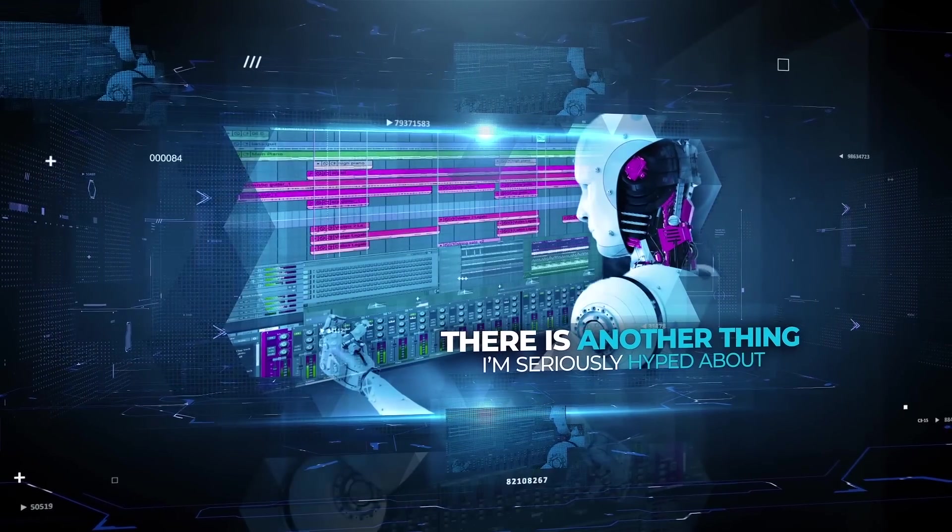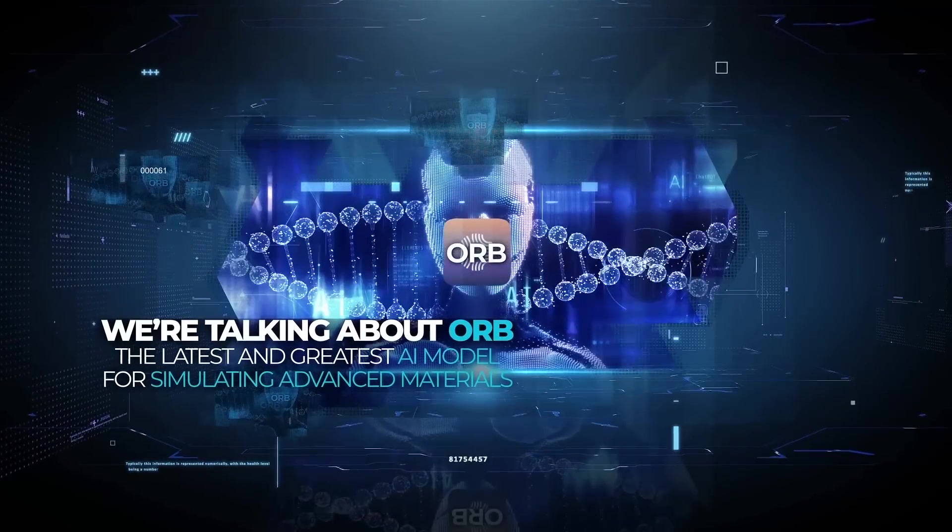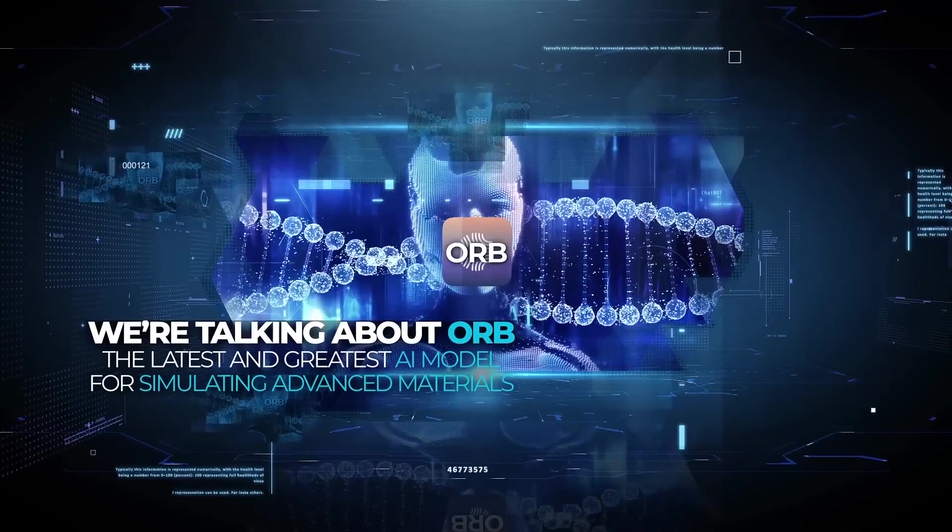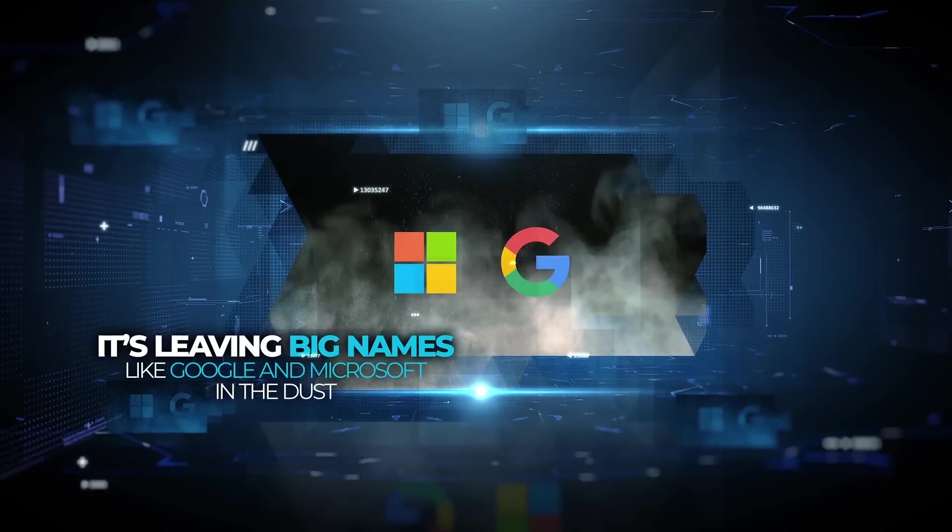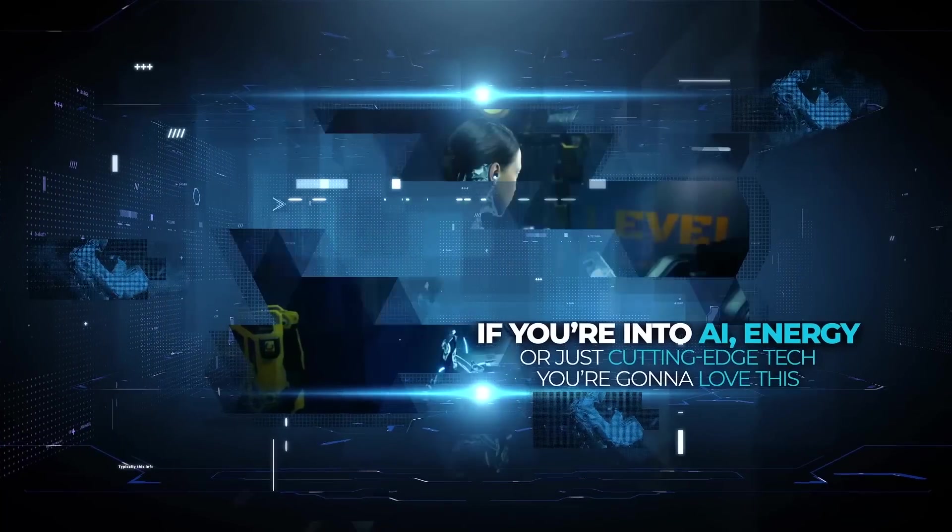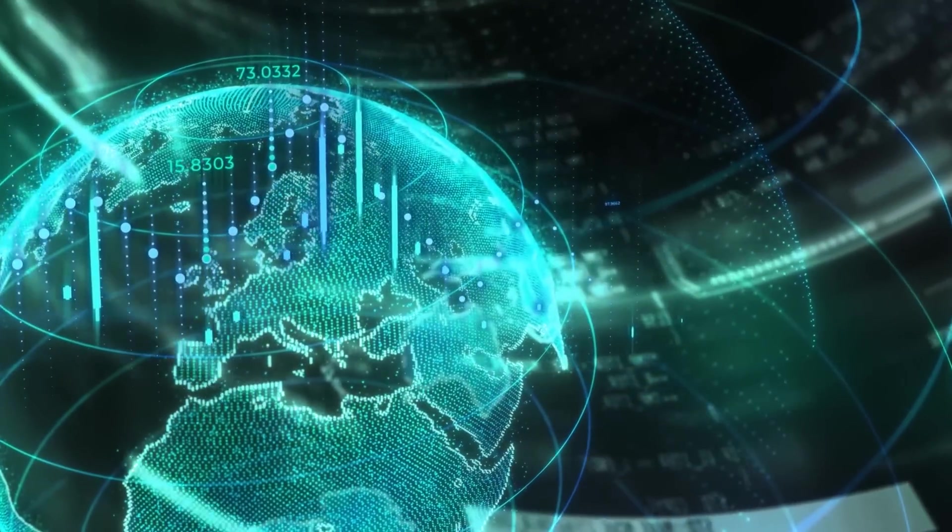All right. Now, there is another thing I'm seriously hyped about, and it's actually a massive breakthrough in AI and material science. We're talking about Orb, the latest and greatest AI model for simulating advanced materials. It's open source, it's blazing fast, and it's leaving big names like Google and Microsoft in the dust. If you're into AI, energy, or just cutting edge tech, you're going to love this. So let me break it down for you.